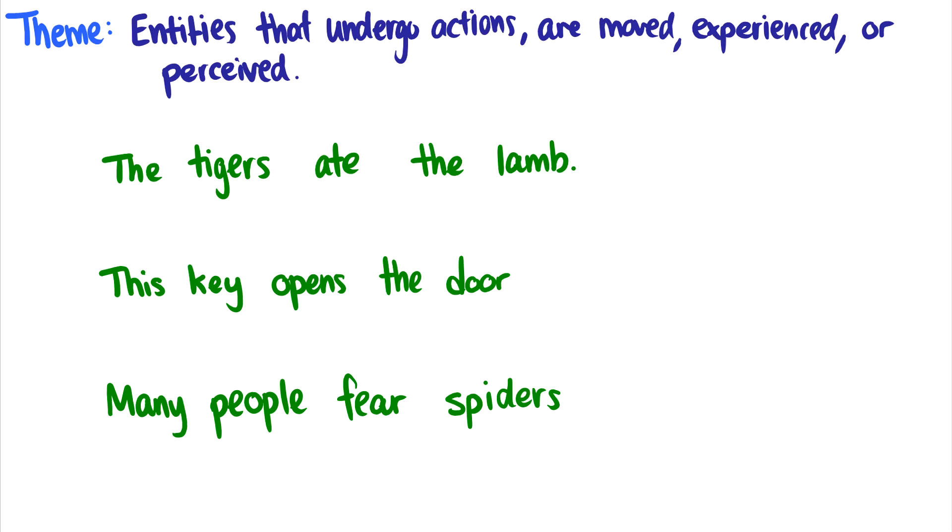So the tigers ate the lamb. Okay, the lamb is the theme of the sentence. It is the thing being eaten. What about the tigers? The tigers are actively eating something. So the tiger is an agent. So agents eat themes.